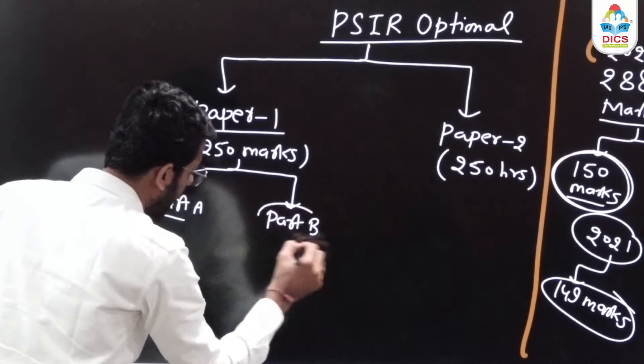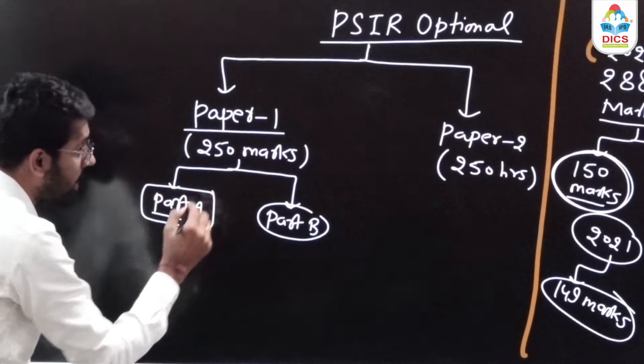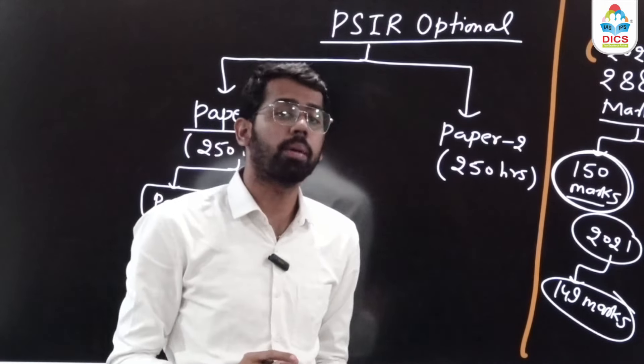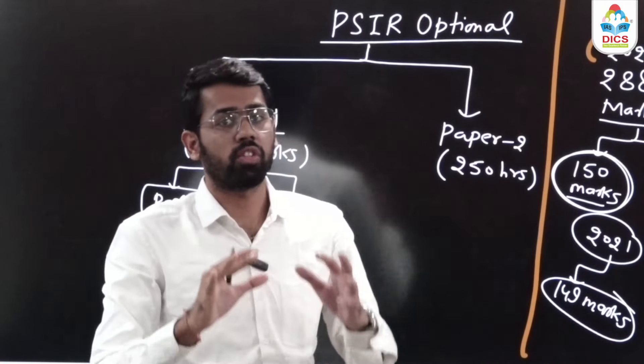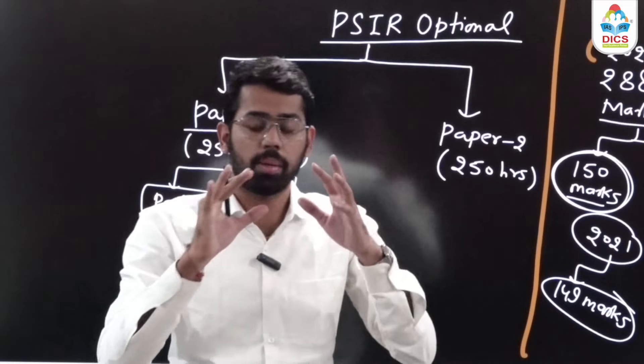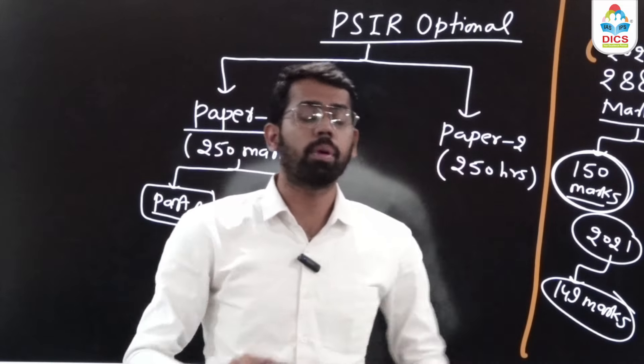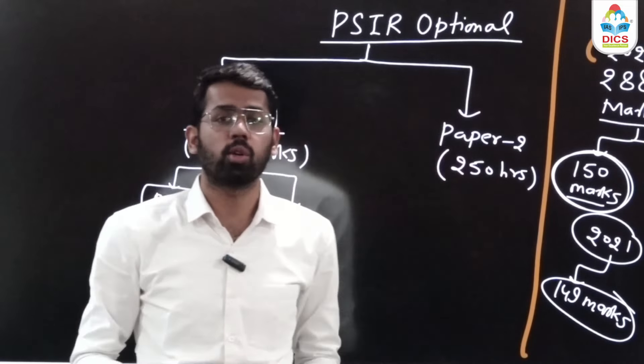The most important thing is how to score and how to approach. Part A is a static part where you study Western Political Thought, political theory, and basic concepts like what is equality, what is justice, and what is democracy.